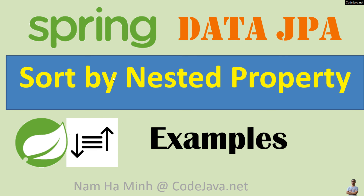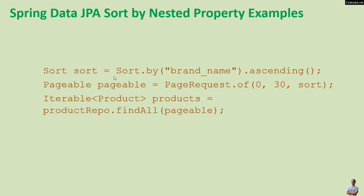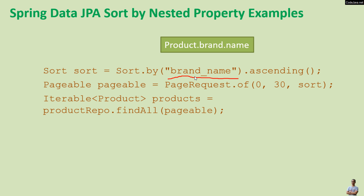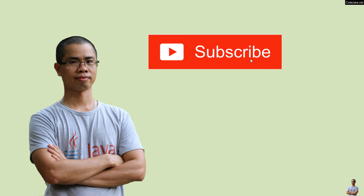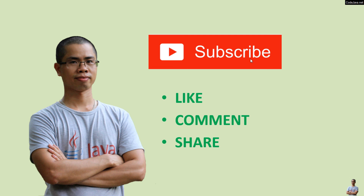So you have learned how to implement sorting by nested property with Spring Data JPA. The key point is to specify the field name to be sorted using an underscore to denote a nested property — for example, to sort a collection of products by brand name, where the product entity has a reference to a brand object with a field name. I hope you found this video helpful — please subscribe to my channel, like, comment, and share. Thanks for watching.